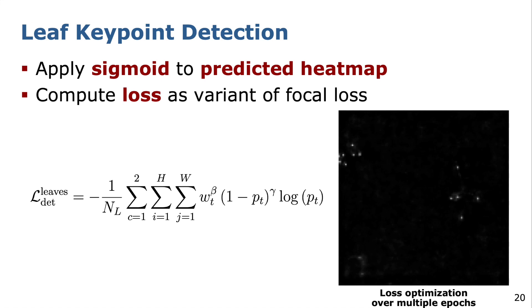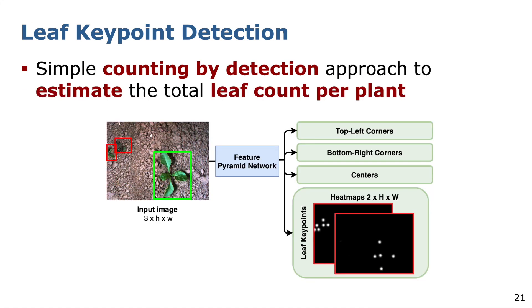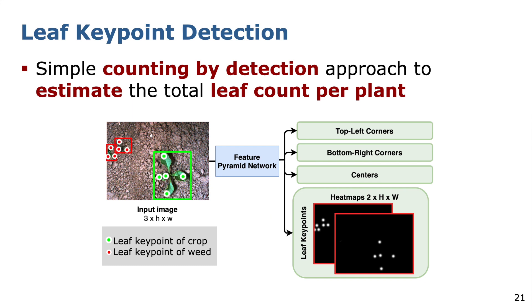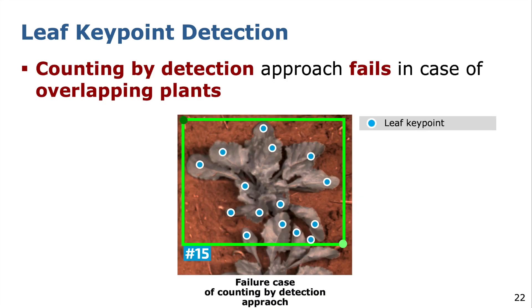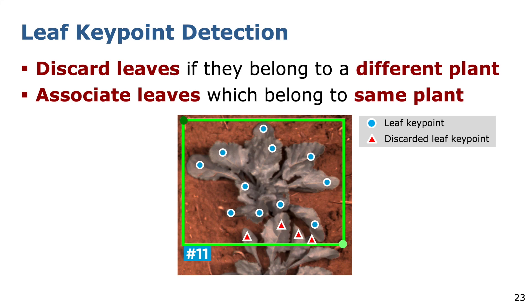On the right side, we show the training procedure of the network over multiple epochs and how it becomes more and more confident about the leaf keypoint positions with an increasing number of epochs. After the network is trained, we apply it to the input image and project each keypoint with a high confidence score to the input image, providing us with the location of all leaf keypoints. One approach to predict the total number of leaves for individual plants is to count all keypoints within a bounding box. However, this counting-by-detection approach fails in case of overlapping plants and leads to over-counting. Instead, we want to discard leaf keypoints if they belong to a different plant by associating them to a specific instance.